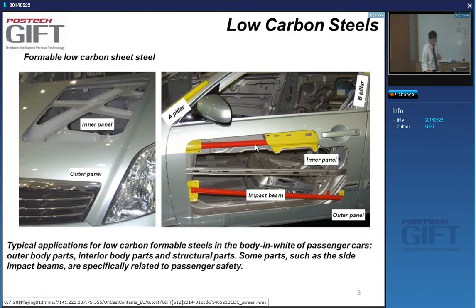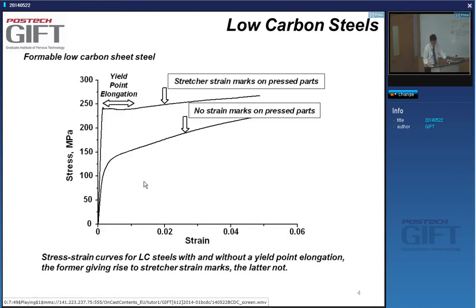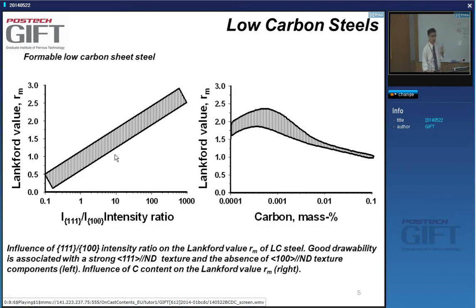There are also parts that are not visible unless you cut the car open, which are very high strength, such as impact beams in the doors of passenger cars. These can be made from ultra-high-strength steels with strengths beyond one gigapascal. An important requirement is that these steels should not strain-harden during forming, so we don't want any yield point elongations when the car maker uses them. We also want a high R value.